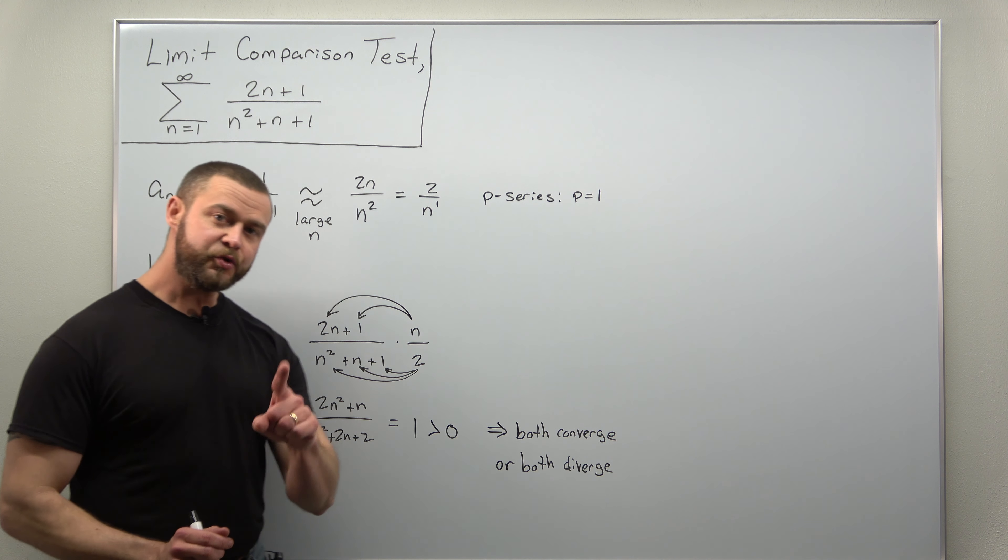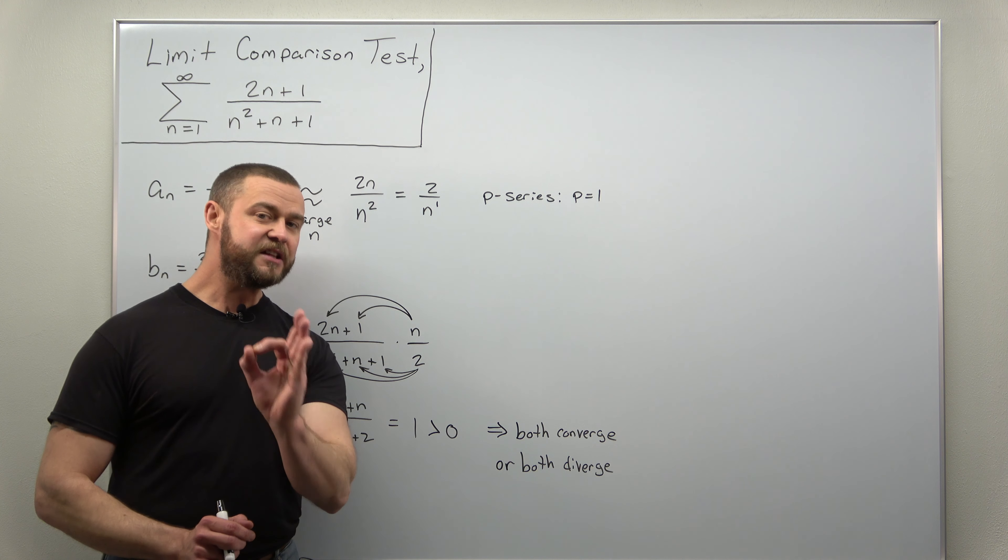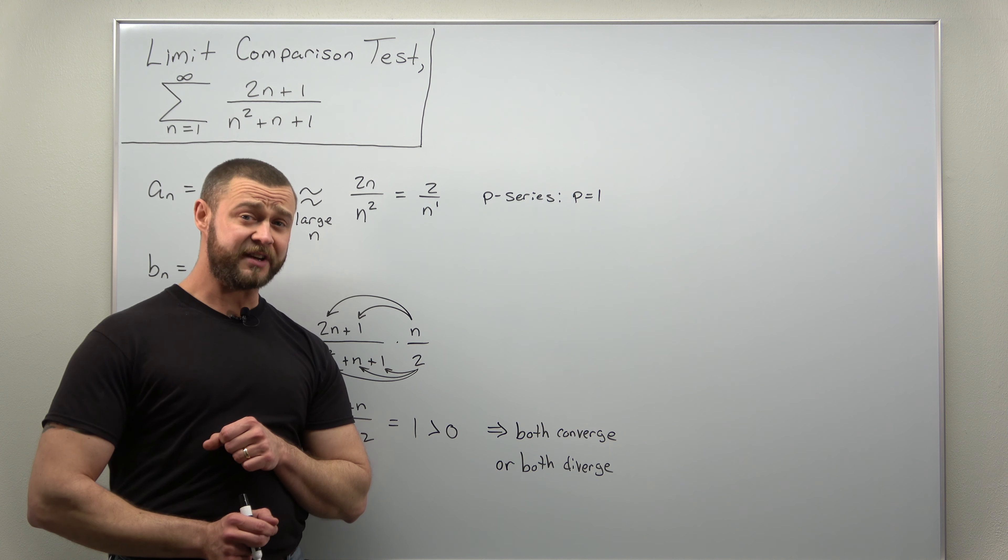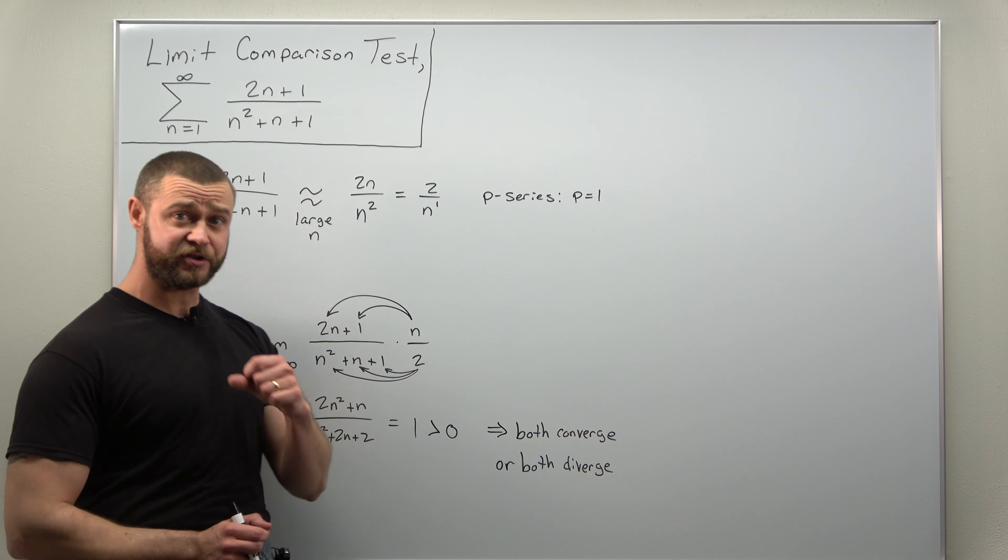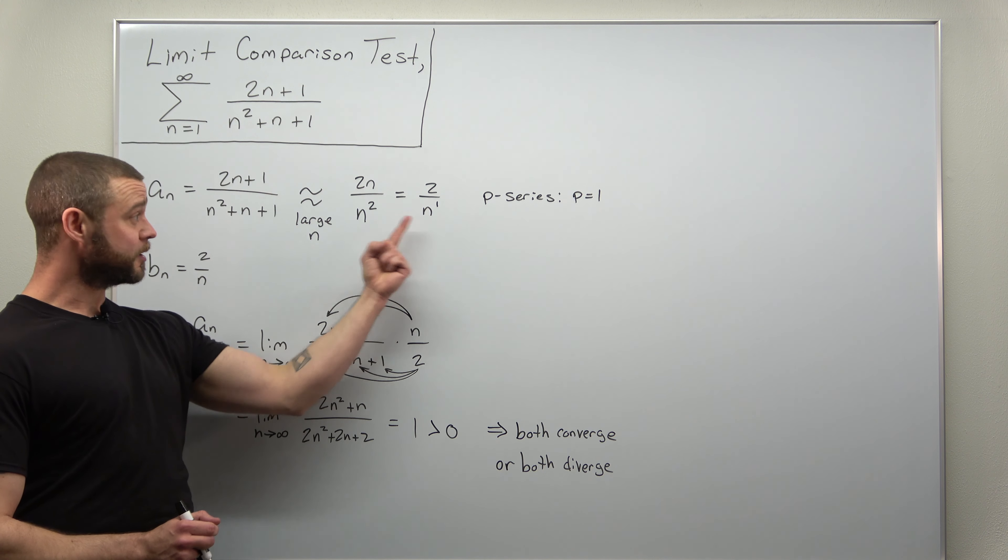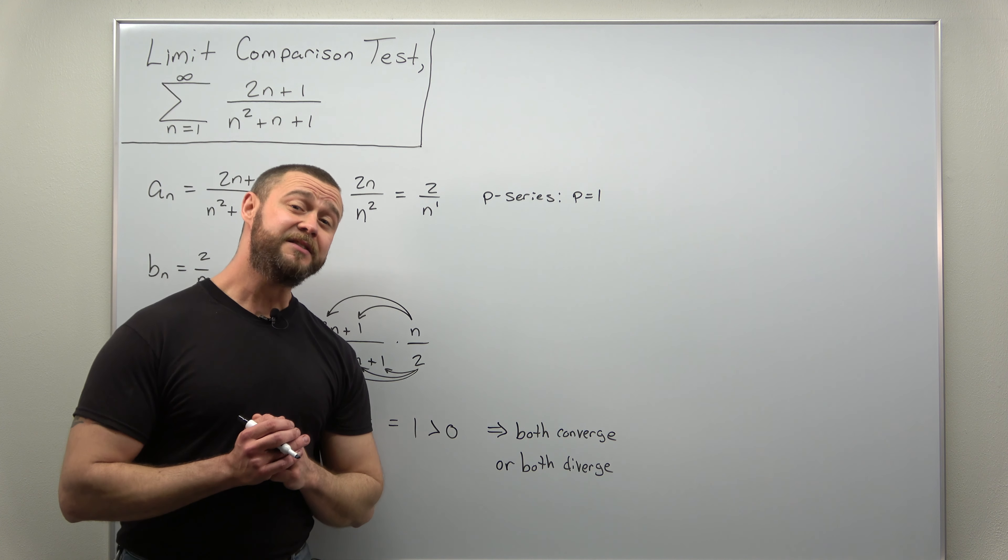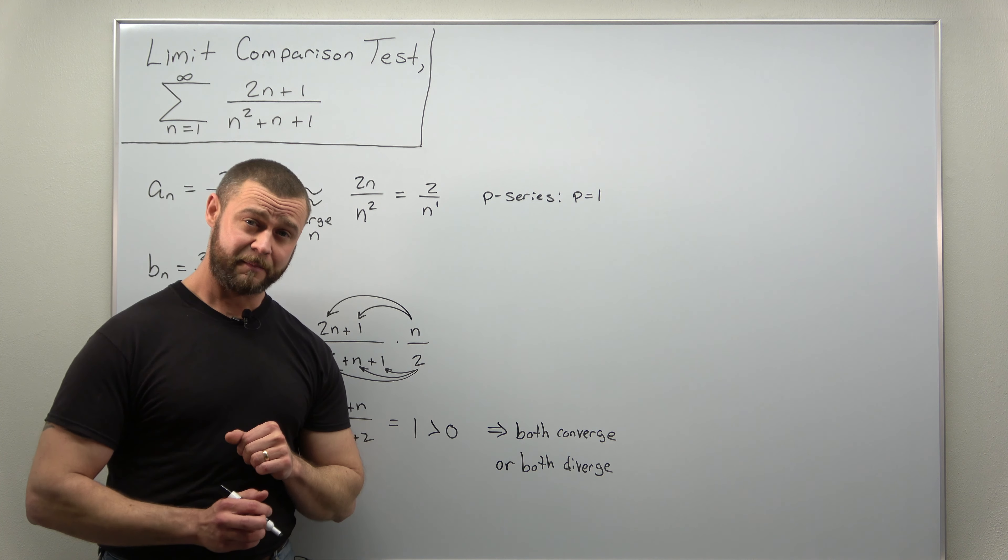Now we go back to our comparison infinite series. You always need to know if your comparison infinite series converges or diverges. And what we have here, the comparison term 2 over n, well, that leads to a divergent p-series.